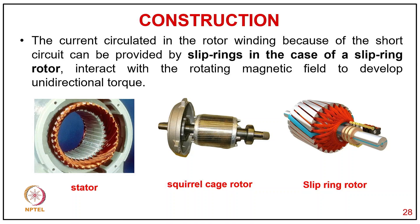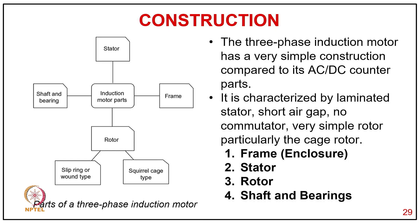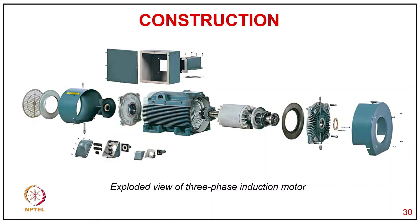The current circulated in the rotor winding due to the short circuit provided by slip rings (in the case of slip ring rotor) interacts with the rotating magnetic field to develop unidirectional torque. The physical construction includes the stator, stator shaft and bearing, frame, and both slip ring rotor and squirrel cage rotor. The three-phase induction motor has a very simple construction with laminated stator, short air gap, no commutator, and particularly simple squirrel cage rotor.